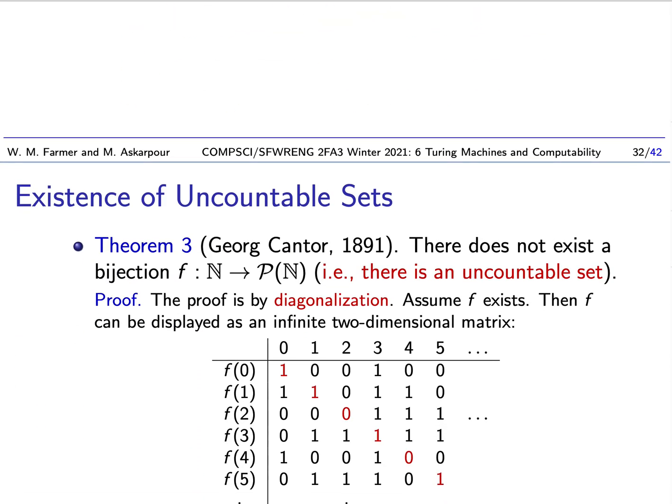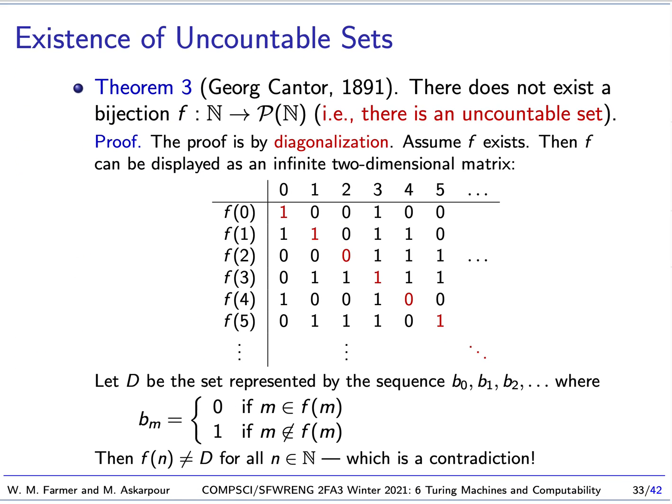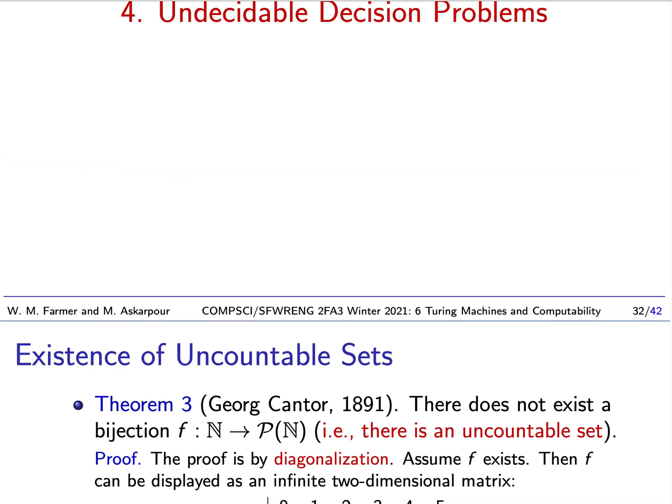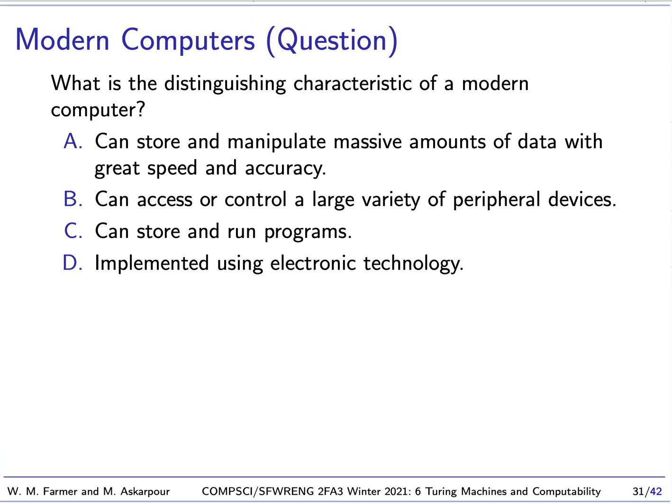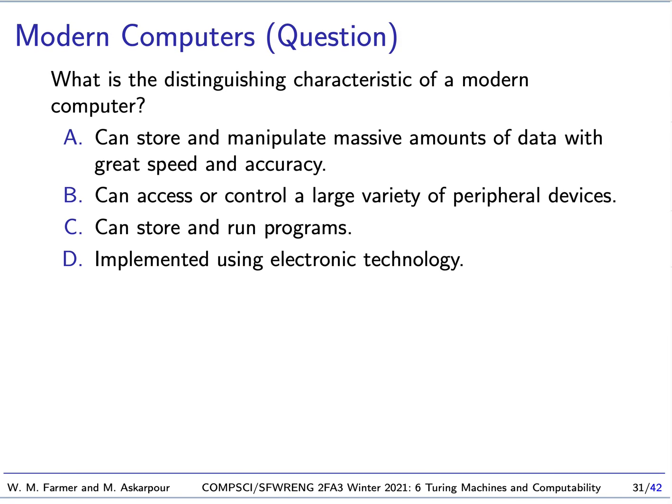Last time we had looked at a proof by Georg Cantor that showed that there are uncountable sets. This proof is important to us because he used a method of diagonalization, and we're going to use the same method to show that there is a particular decision problem that is undecidable. A bit back, we had this question about modern computers. What is the distinguishing characteristic of a modern computer?